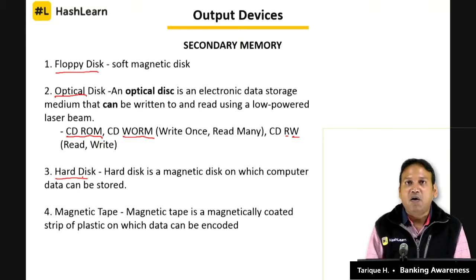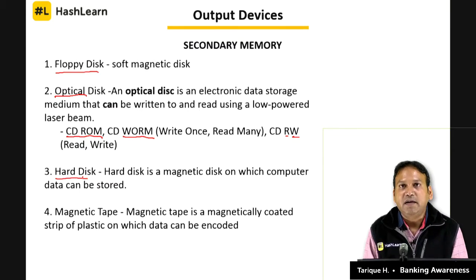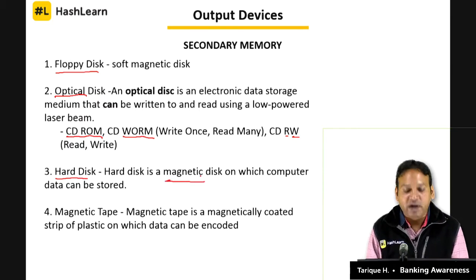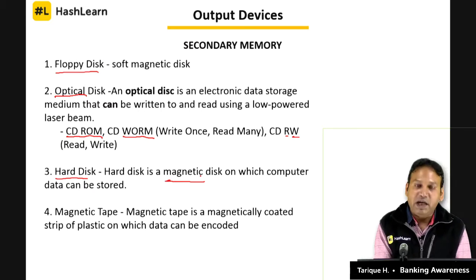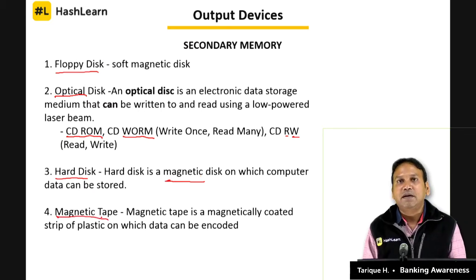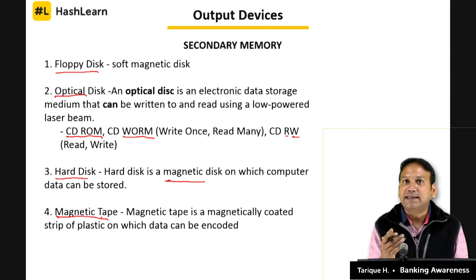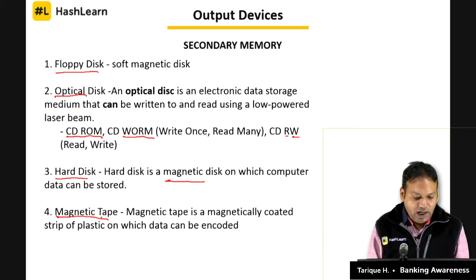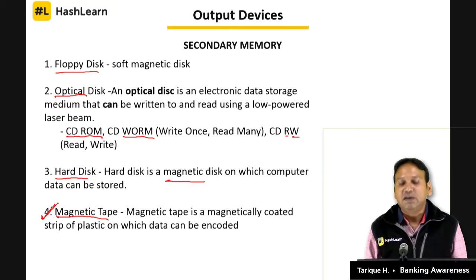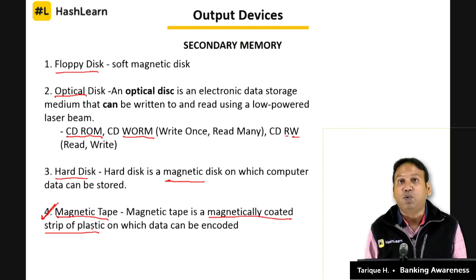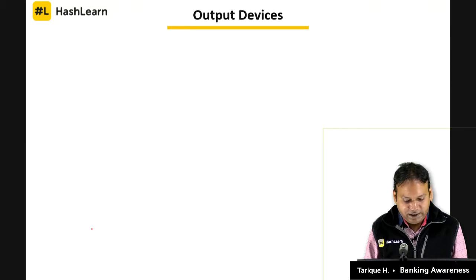The hard disk is a magnetic disk — similar technology to the floppy disk but more robust, allowing large amounts of data to be stored (e.g., 1TB, 2TB). The fourth type of secondary memory is magnetic tape — similar to old audio cassettes or VHS video tapes. A magnetic tape is a magnetically coated strip of plastic on which data can be encoded.